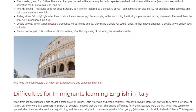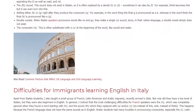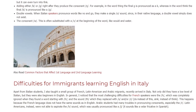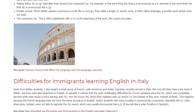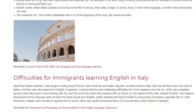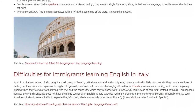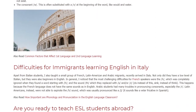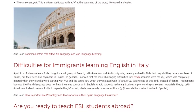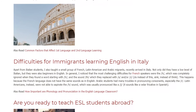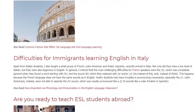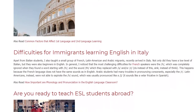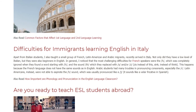Apart from Italian students, I also taught a small group of French, Latin American, and Arabic migrants recently arrived in Italy. Not only did they have a low level of Italian, but they were also beginners in English. The most challenging difficulties for French speakers were the H, which was completely ignored when they found a word starting with H, and the sound TH, which they replaced with S or Z — 'Z' instead of 'this,' 'sink' instead of 'think.' This happens because the French language does not have the same sounds as in English.